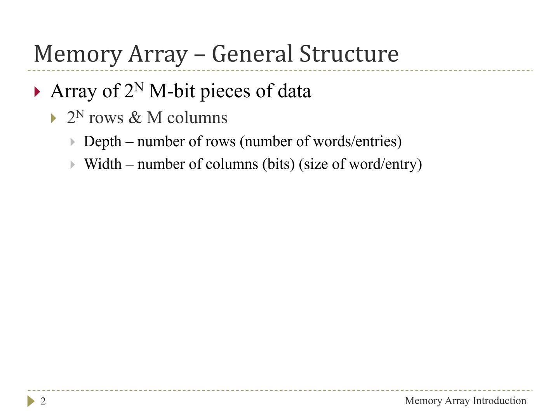Similarly, the width refers to the number of columns or the number of bits that is stored in an individual row or an individual word or entry. And so the width is also the size of the word or entry in the array. And then with these two things combined, we can say that the total size of the array or the total number of bits stored in the array is 2 to the n times m bits.